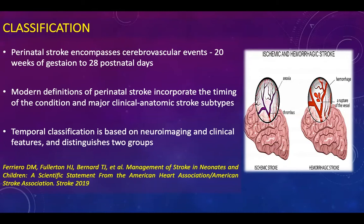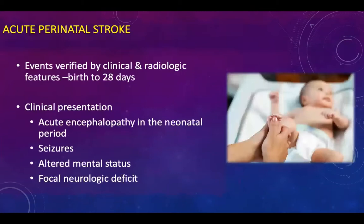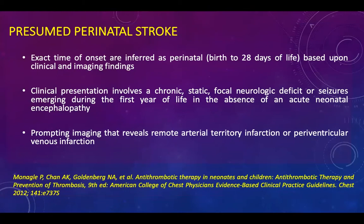Classification involves perinatal stroke as a cerebrovascular event from 20 weeks of gestation to 28 days postnatal life. Modern definitions incorporate the timing of the condition and major clinical anatomic stroke subtypes. Temporal classification is based on neuroimaging and clinical features and distinguishes two important groups. Acute perinatal stroke is defined as events verified by clinical and neurological features from birth up to 28 days, with presentations including acute encephalopathy, seizures, focal neurological deficits, and altered mental status.